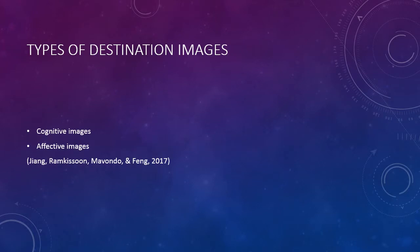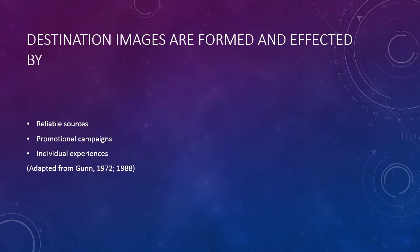There are two types of destination images according to GIM 2017: cognitive images and affective images. Cognitive images can be identified as a person's beliefs towards a certain location, such as its quality or uniqueness. Affective images can be identified as a person's emotions towards a certain place, such as whether they feel happy or sad about how it is being portrayed.